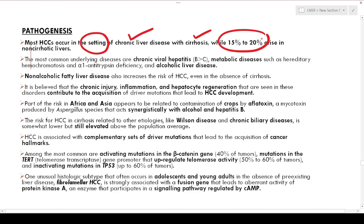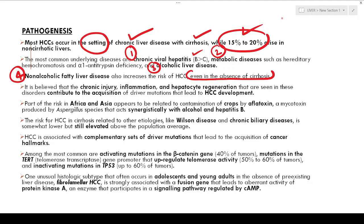The most common underlying conditions in which HCC occurs are: number one, chronic viral hepatitis — hepatitis B is more implicated than C. Other metabolic diseases such as hereditary hemochromatosis or alpha-1 antitrypsin deficiency, as well as alcoholic liver disease. Non-alcoholic fatty liver disease also increases the risk even in the absence of cirrhosis. NASH is one example of HCC arising in non-cirrhotic liver. In all these conditions, chronic injury, inflammation, and hepatocyte regeneration contribute to acquisition of driver mutations.